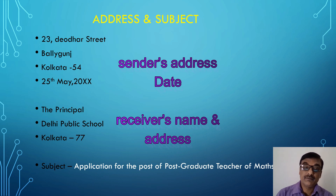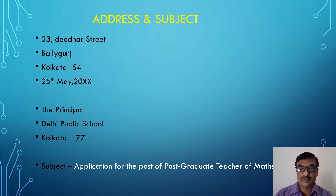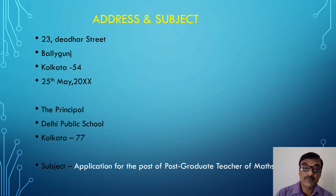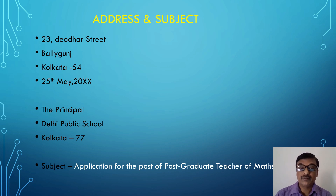The address is: 23 Devudhar Street, Baliganj, Kolkata 54 — the pin code you have to invent, but the rest is given in the question. Next, with one line gap, the date is to be provided: 25 May 2024, or whatever date you write the application — it doesn't matter.